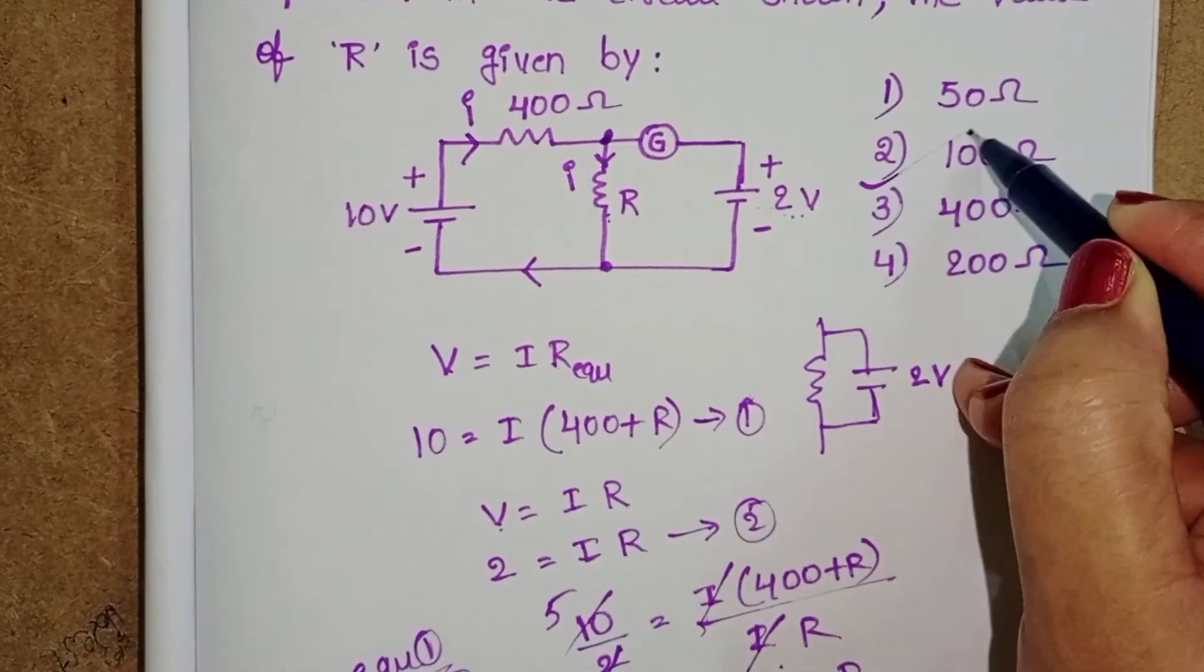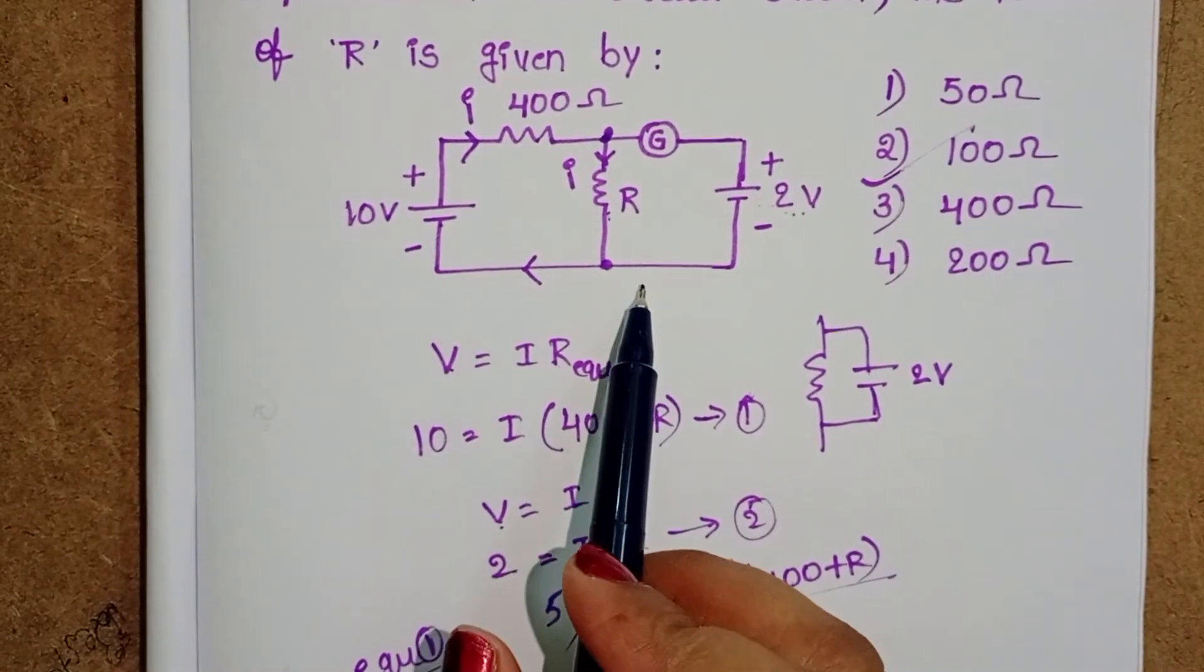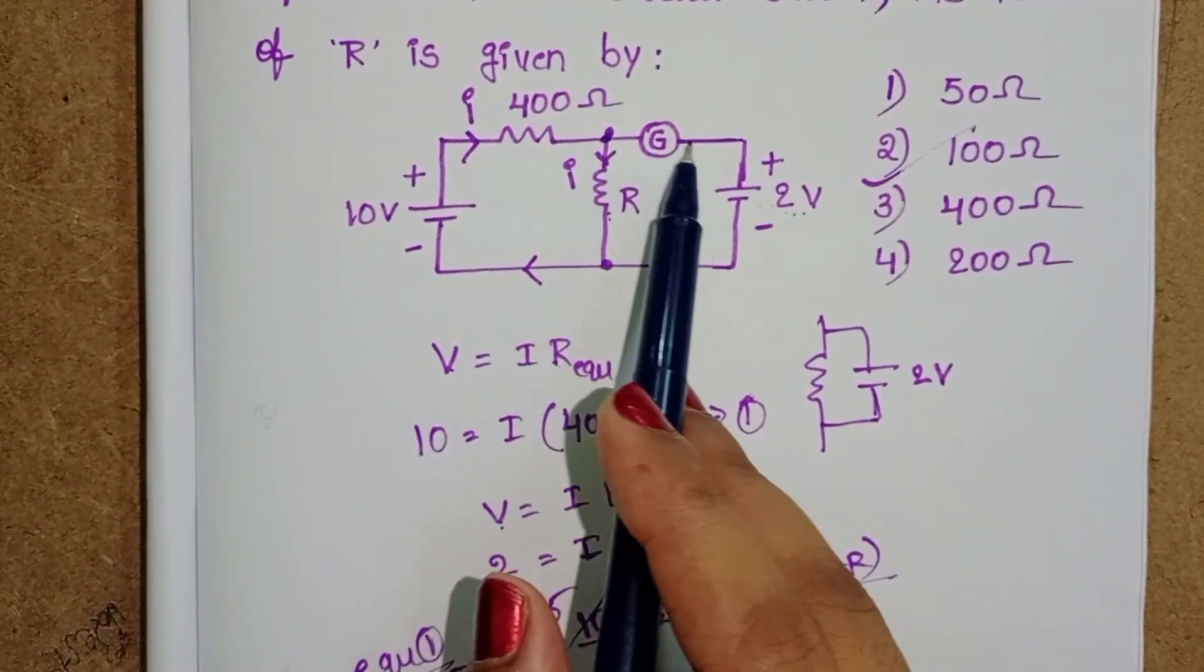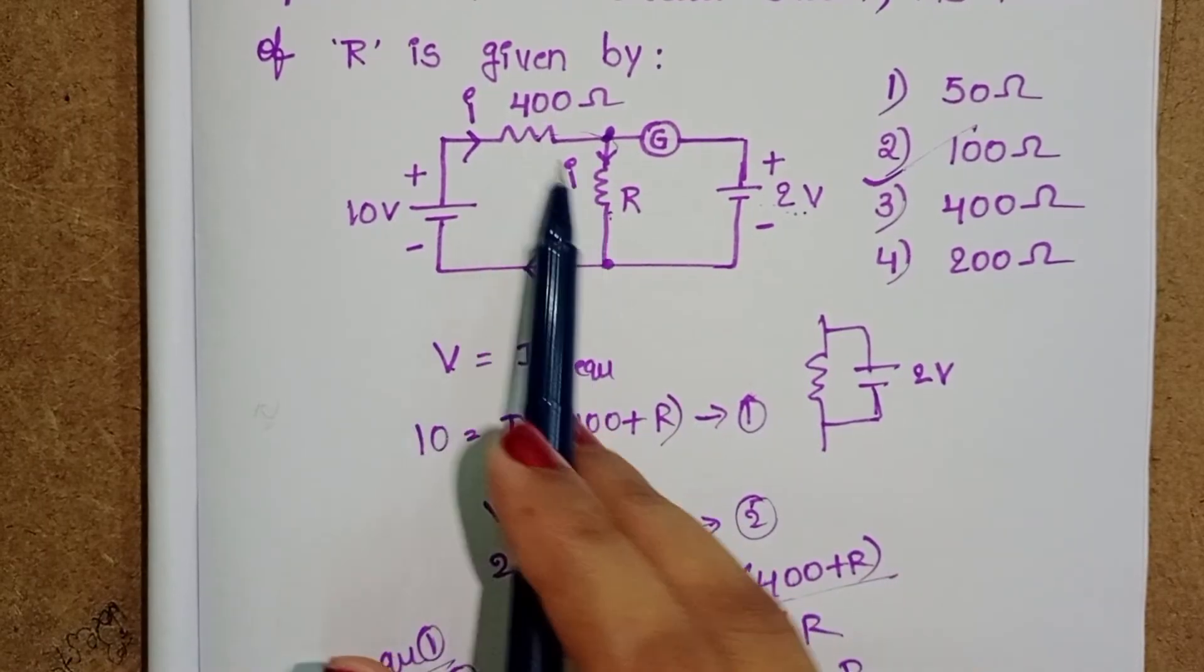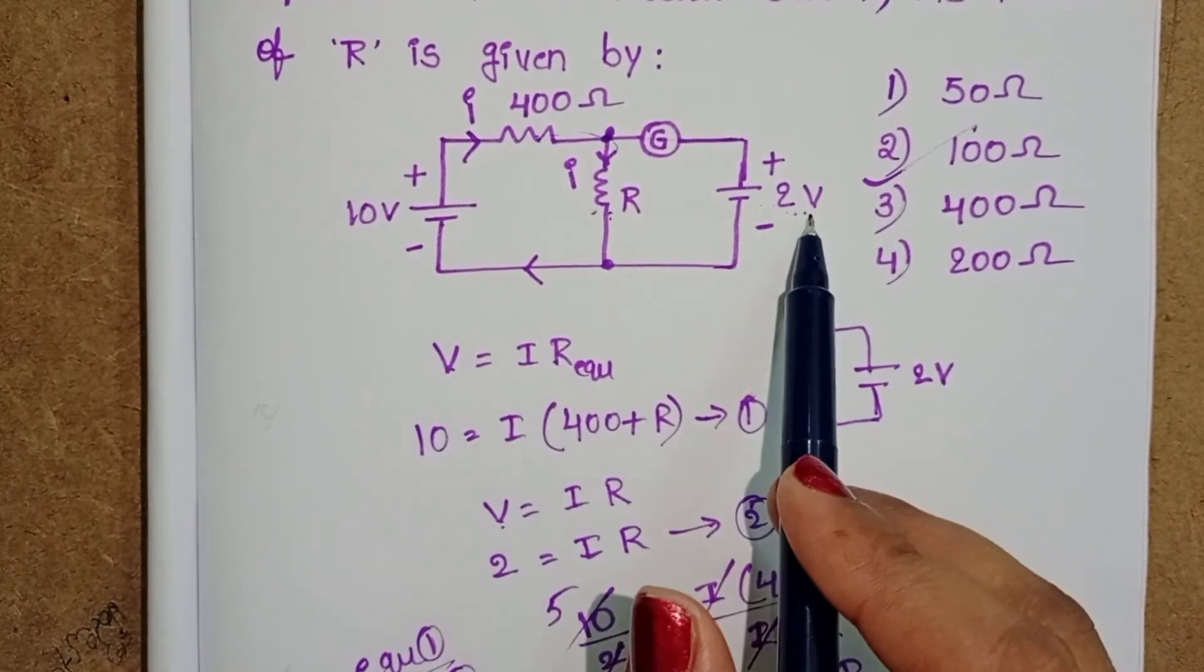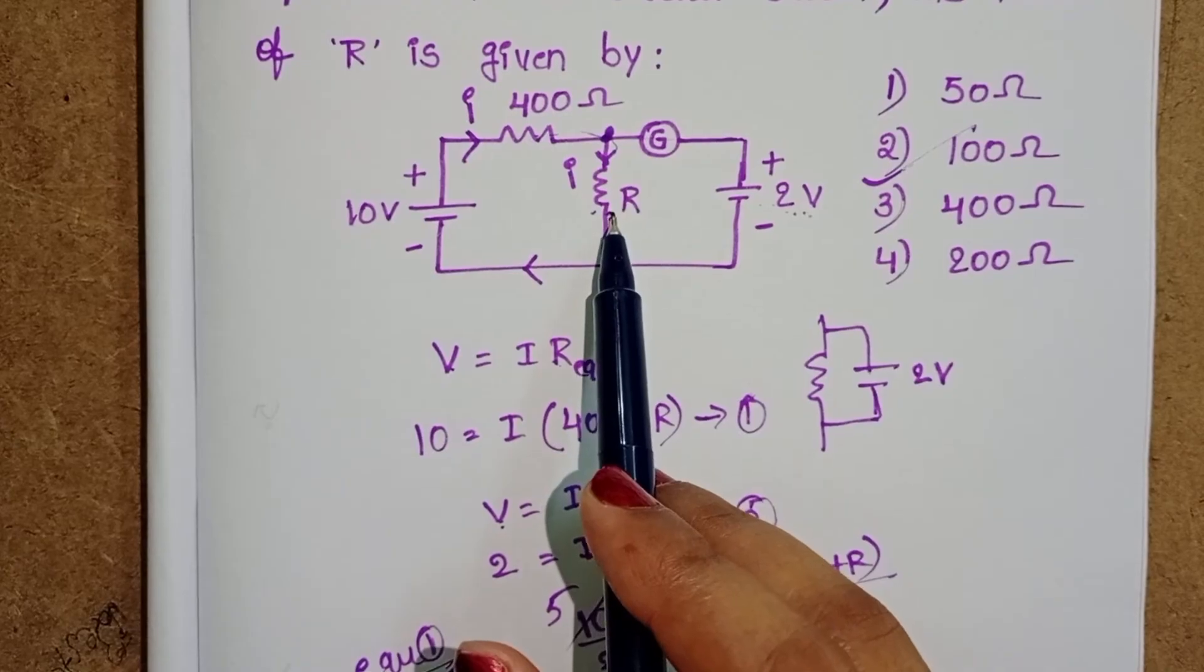Second option is correct. Here the main point in this circuit is galvanometer does not show any deflection. These two resistors in series and 2 volt battery connected parallel to this resistor.